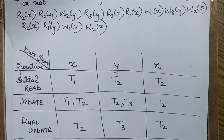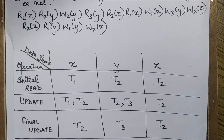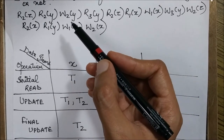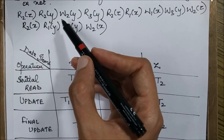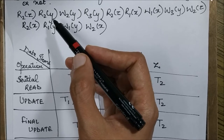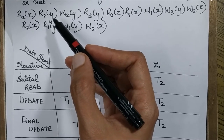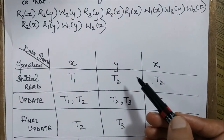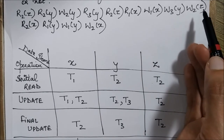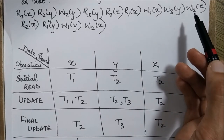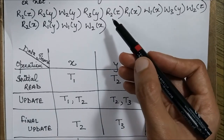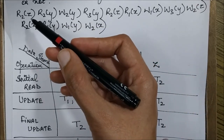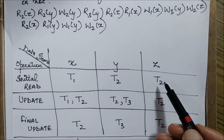Next, we check for data item y in a similar manner. We find a write operation on y, and there is only one read operation before it, so only T2 performs an initial read on y. Similarly for z, we find the write operation and there is only one initial read — R2 — and although there is another read operation on z, both are from T2, so we write T2 for z as well.